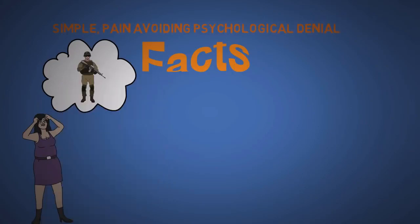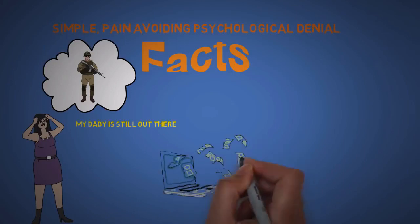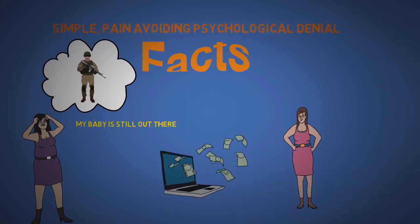The eleventh is simple pain avoiding psychological denial. We have a habit of distorting the facts. There's stories of mothers who receive news that their son from the army died, and refuse to believe it. We can trick ourselves to numb the pain. Get rich quick or lose weight quickly scams work effectively on people who are in denial.